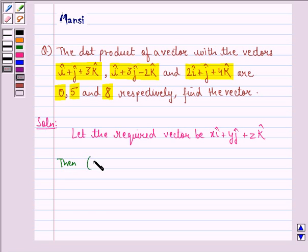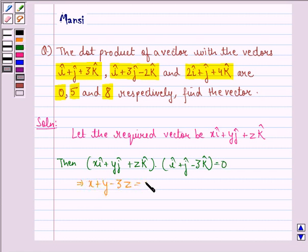Then, xi cap plus y j cap plus z k cap dot i cap plus j cap minus 3k cap is equal to 0. This implies x plus y minus 3z is equal to 0. We call this equation 1.